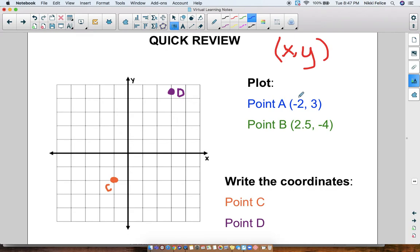So point A, we want to plot it at negative 2, comma 3. Well, negative 2 is my x-coordinate, so negative means left, so I'm going to go 1, 2 to the left. And then 3 is my y-coordinate, so I'm going to go 1, 2, 3 right here.